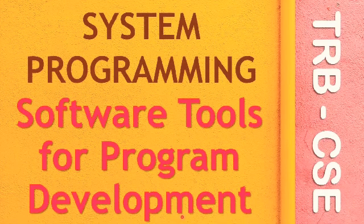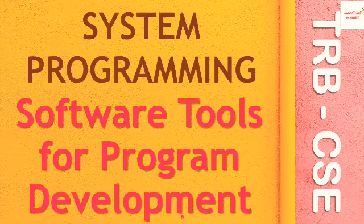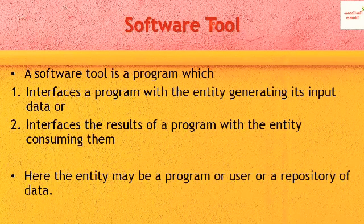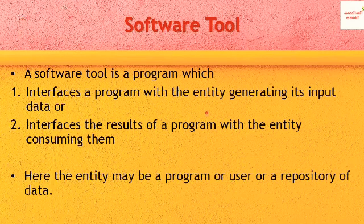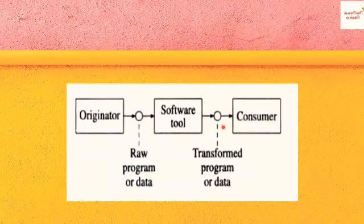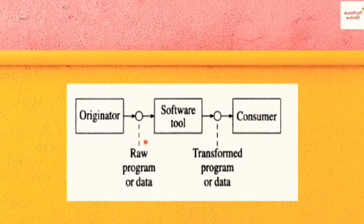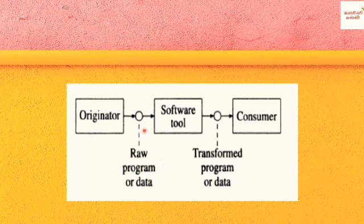Welcome to Canonical V. In this video, we will discuss the topic: software tools for program development in system programming. The first software tool is a program. Interface is a program with the entity generating its input data. A software tool interfaces with the program and also with the entity who is generating the data.